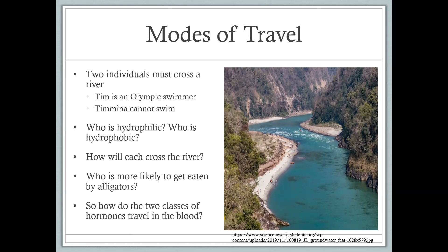Hopefully that brief analogy made sense. Now I'm going to give you a moment to answer this question: based on what we just covered, how do the two classes of hormones travel in the blood? Remember our two classes — amino acid-based and lipid-based. If you are amino acid-based, how will you cross the river, meaning the bloodstream? And if you are hydrophobic, how will you cross the bloodstream? And who is more likely to get eaten by your biological alligators, which are enzymes? Pause the video and think through these questions.